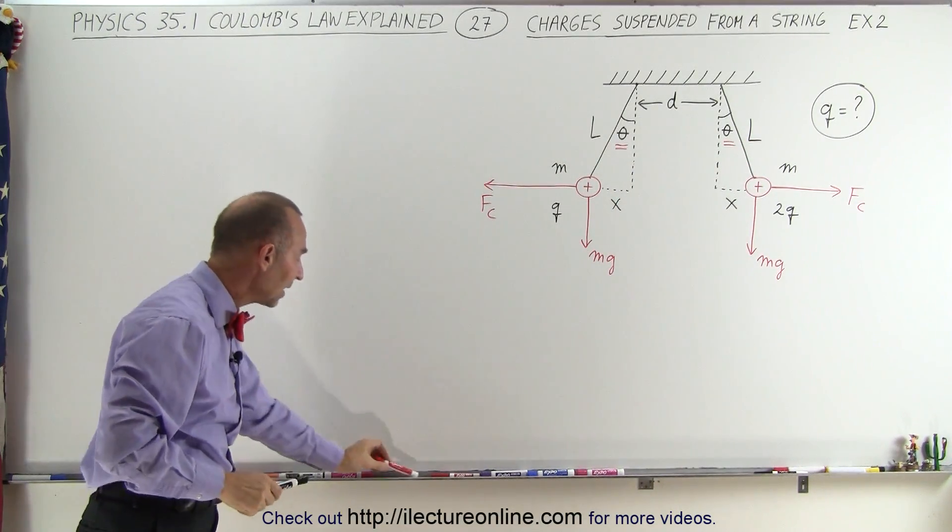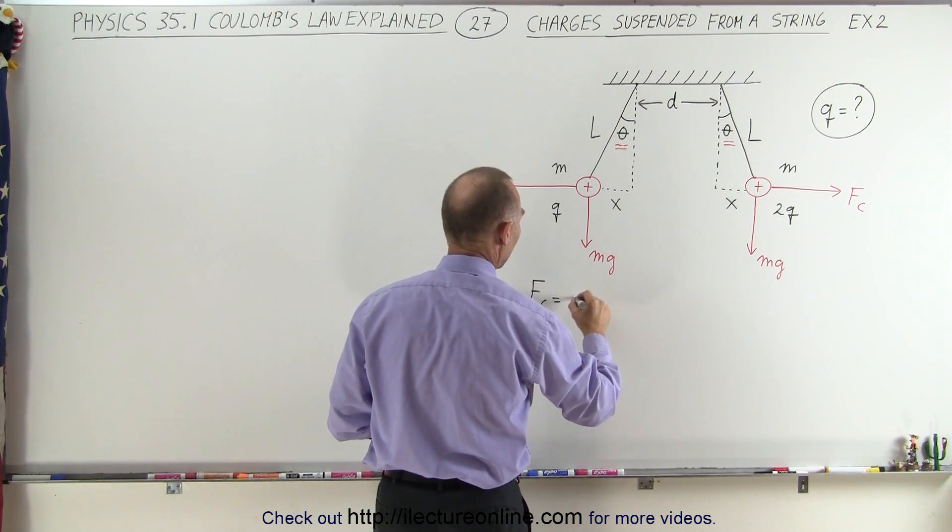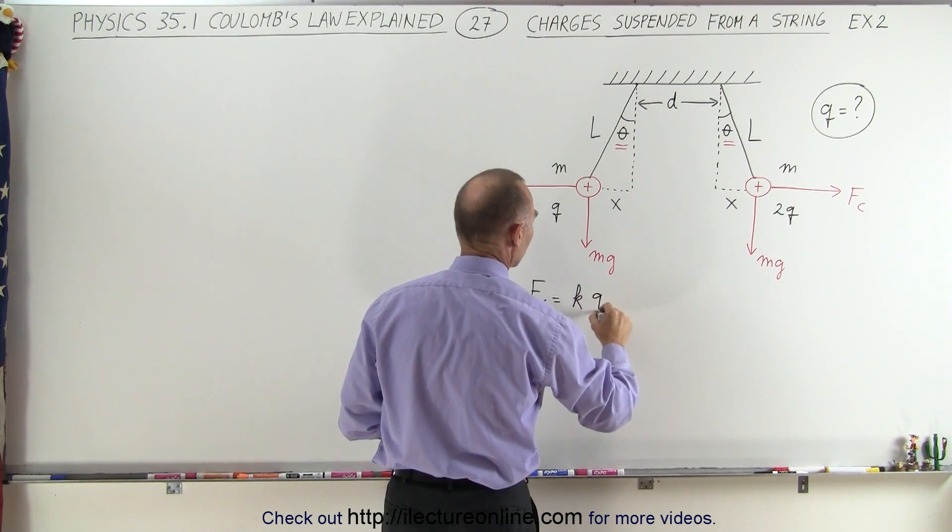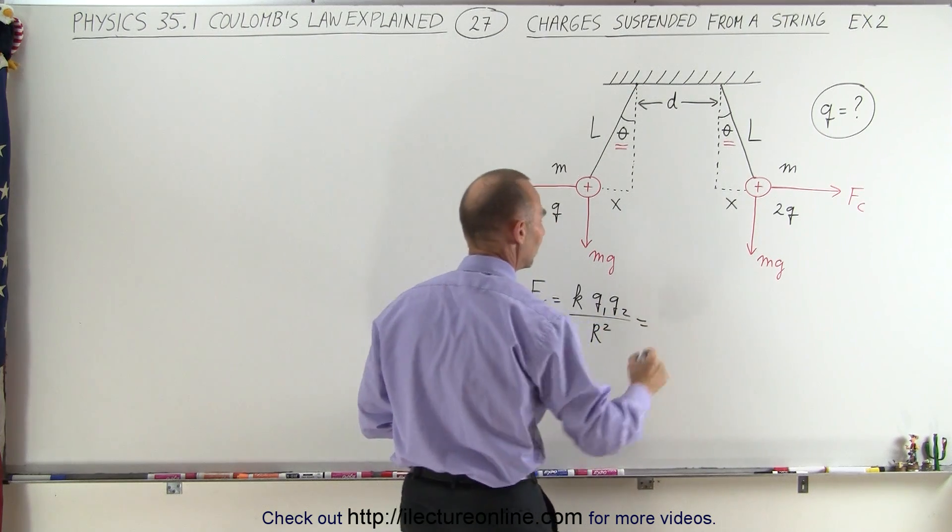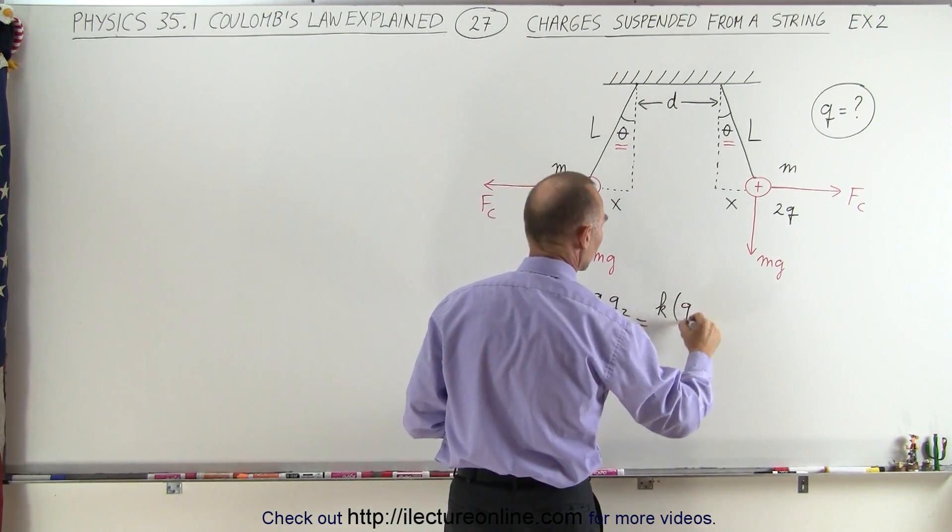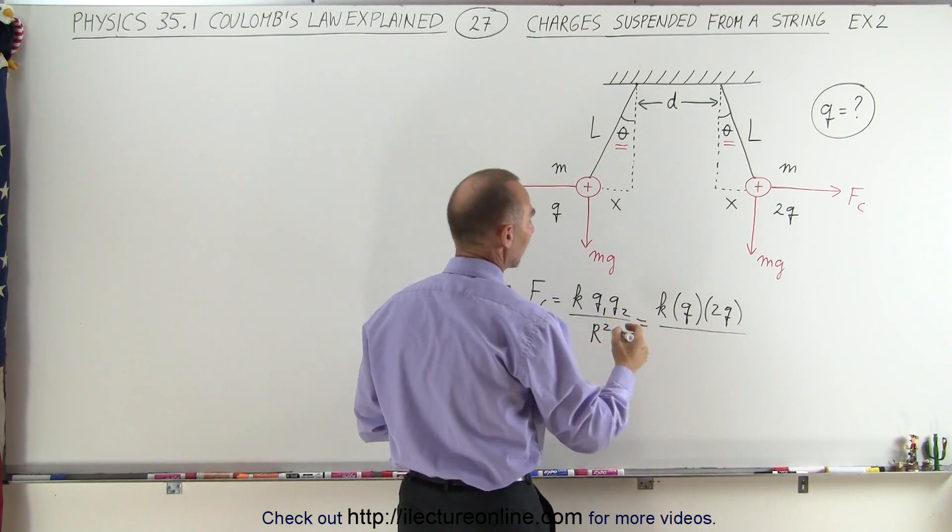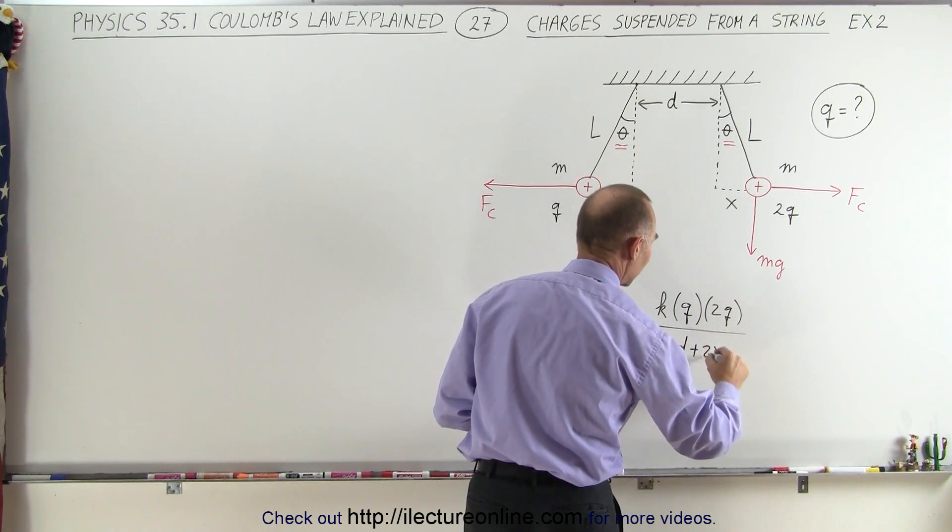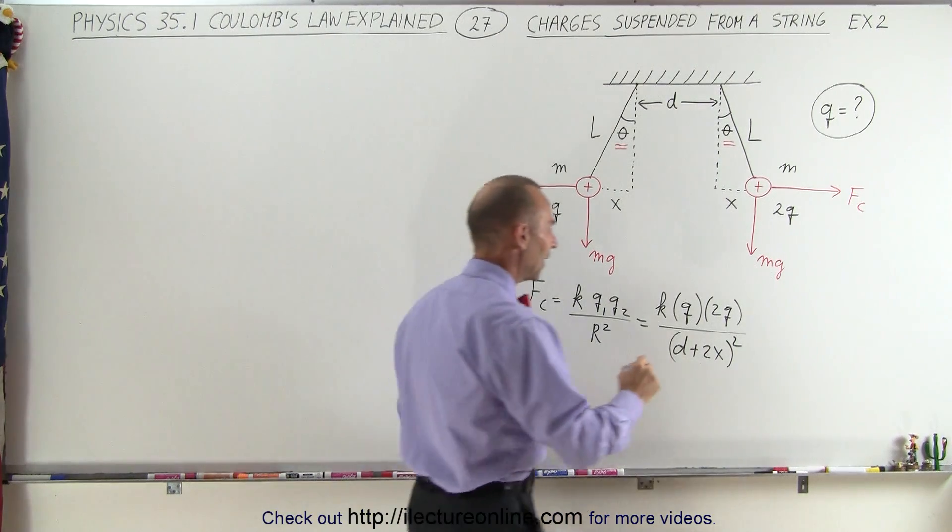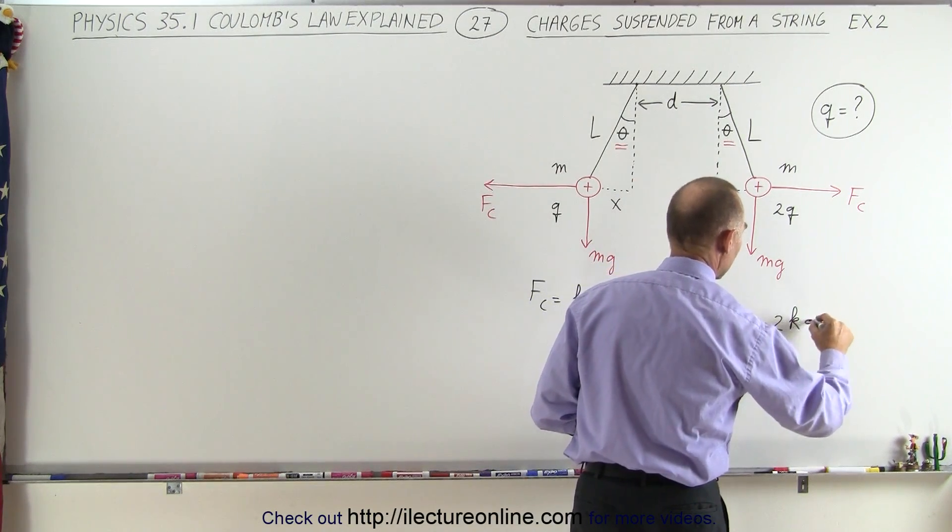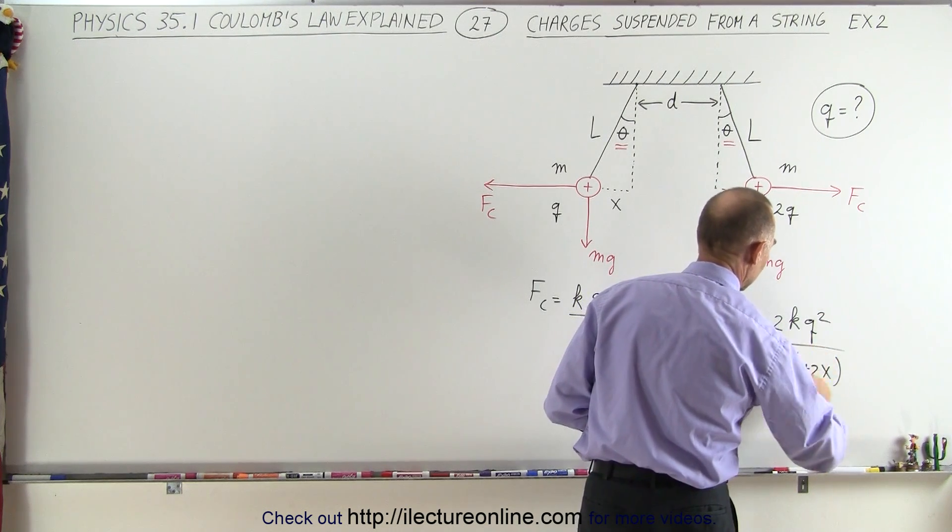Okay, knowing that, let's now find the Coulomb force. The Coulomb force F_C is going to be equal to K times the two charges Q1 times Q2 divided by the distance between them. So in this case that's going to be K times Q1 is Q, Q2 is 2Q, and the distance between them is D plus 2X, and we have to square that distance, quantity squared. So simplifying that, this is equal to 2KQ² divided by (D + 2X)².